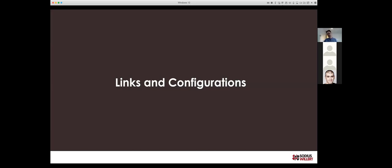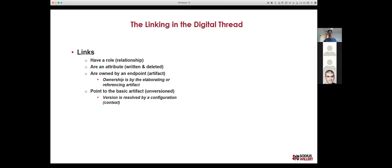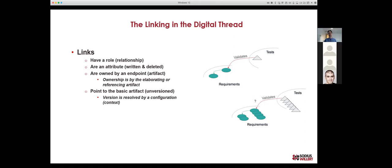Dealing with all those versions ultimately comes down to answering the question of how do I do linking. In OSLC, I want a link between artifacts — links are directional, going from one artifact to another, but they're unversioned. The link describes how one artifact relates to another, but not which version of that artifact. The critical decision is: how do I determine which version of that artifact in that other repository I go to? That's what configuration management is all about.